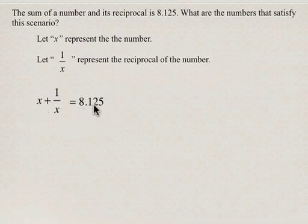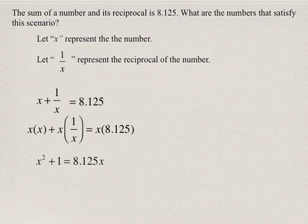This is kind of messy the way it's written, mostly because of this 1 over x, so we're going to get rid of that fraction by multiplying everything in the equation by x. When we multiply everything by x, we get x squared, x times 1 over x equals 1 because the x's cancel out, and x times 8.125 equals 8.125x.